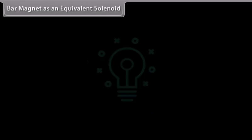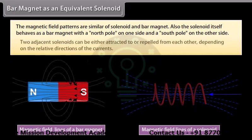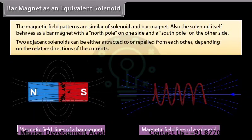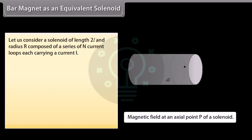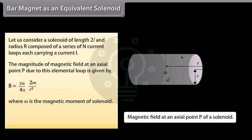Bar magnet as an equivalent solenoid: The magnetic field patterns of a solenoid and a bar magnet are similar. The solenoid itself behaves as a bar magnet with a north pole on one side and a south pole on the other side. Two adjacent solenoids can be either attracted to or repelled from each other depending on the relative directions of the currents. For a solenoid of length 2L and radius R composed of N current loops each carrying current I, the magnitude of the magnetic field at an axial point P due to an elemental loop is given by (μ₀/4π) × (2m/R³), where m is the magnetic moment of the solenoid. This is exactly the same as that of a bar magnet at a far-off axial point.